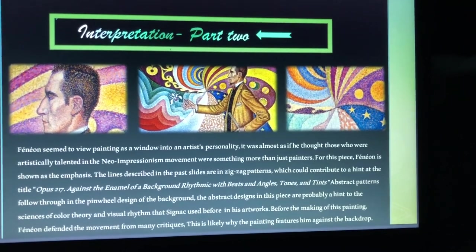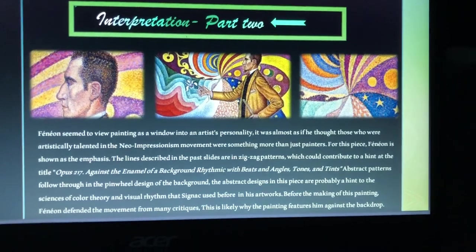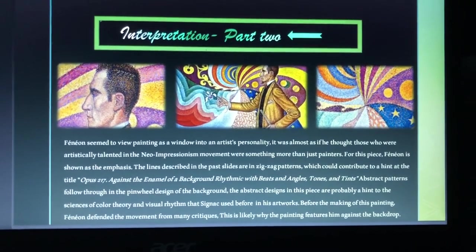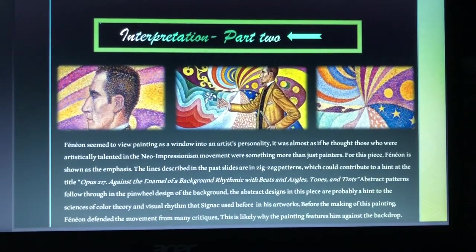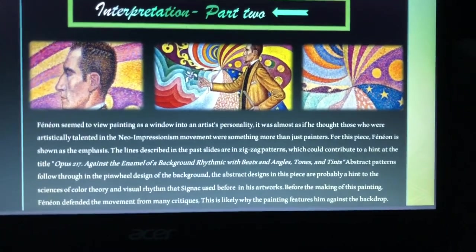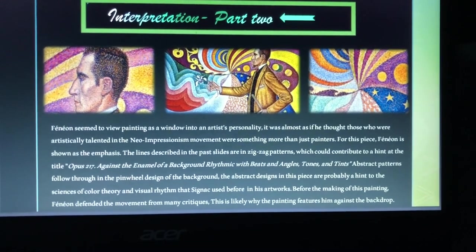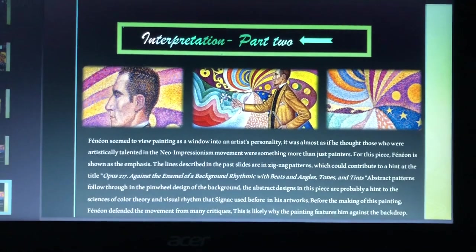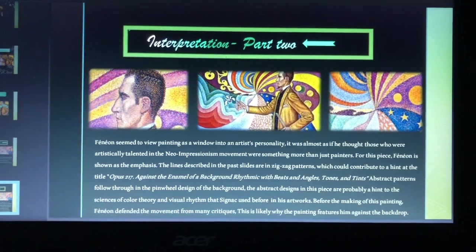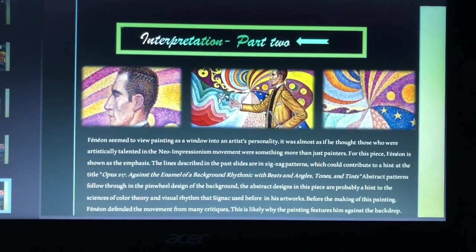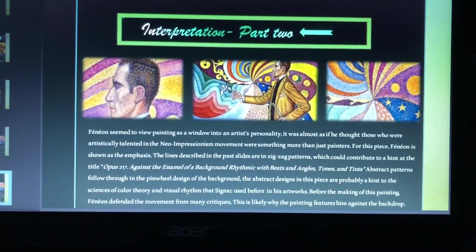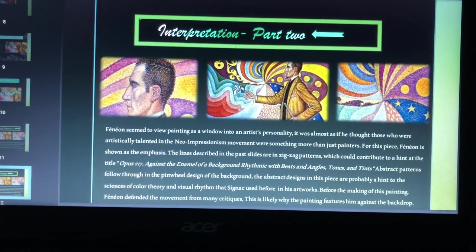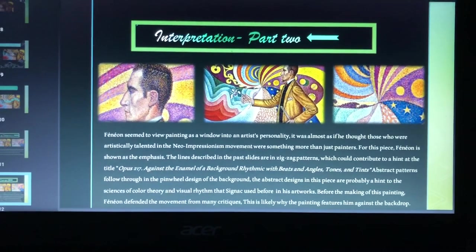Fanon really seemed to look at painting as a window into an artist's personality — he felt deeply about neo-impressionism because he thought that those who used that movement were doing more to show who they were than anybody else at the time. For this piece, Fanon is shown as the emphasis, as I mentioned before, and the zigzag lines described in past slides could contribute to a hint at the title, Opus 217 Against the Enamel of a Background Rhythmic Beats and Angles, Tones and Tints. Abstract patterns follow throughout the pinwheel design, and designs in the piece are probably a hint of the science of color theory and visual rhythm that Signac had used before in his artworks.